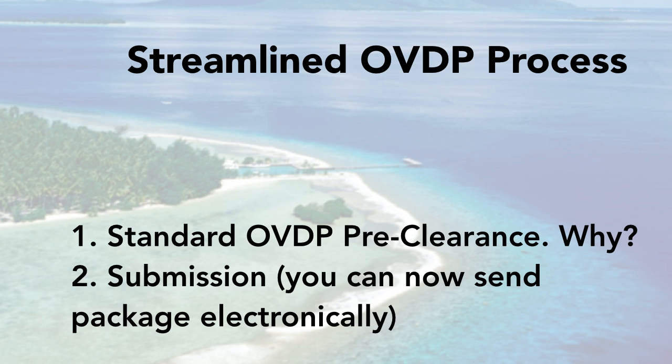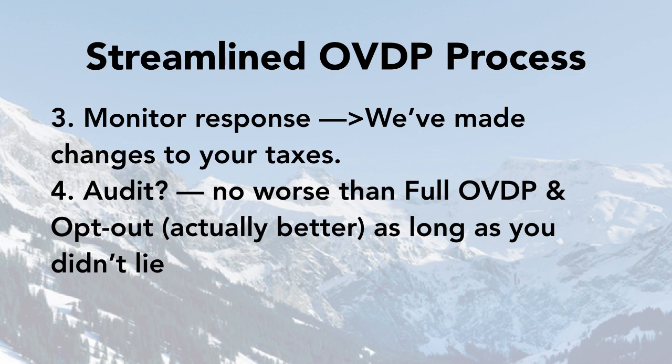That's why we want to send in the standard OVDP preclearance first — if we just send in your submission, there are months that could go by. The preclearance lets us know if you're cleared to file. After we make your submission with the certification and amended returns and missing information returns, we monitor their response. They may come back asking us to substantiate things. Unlike the standard OVDP where you receive a Letter 906, with the streamlined program you get a notice from the IRS saying they've made changes to your taxes — that means your streamlined has been accepted and processed.